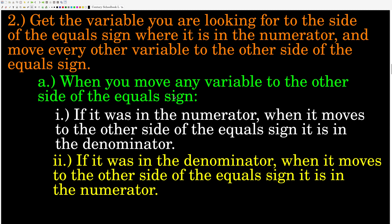Remember, whenever you move any variable across an equal sign, if it was in the numerator — the top — then it ends up in the denominator on the other side. If it was in the denominator, then it ends up in the numerator — the top — on the other side. If it was in the bottom, it ends up in the top when you move it across the equal sign.